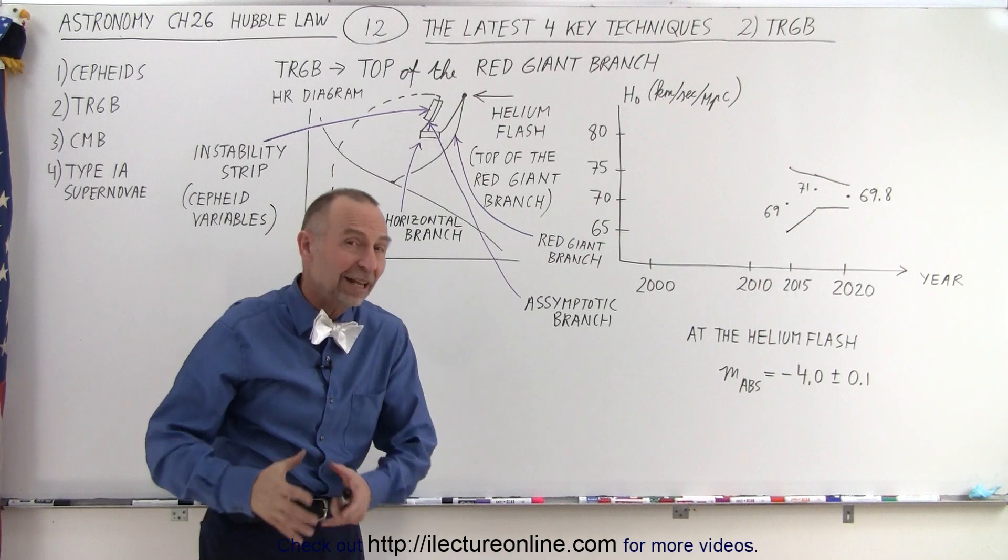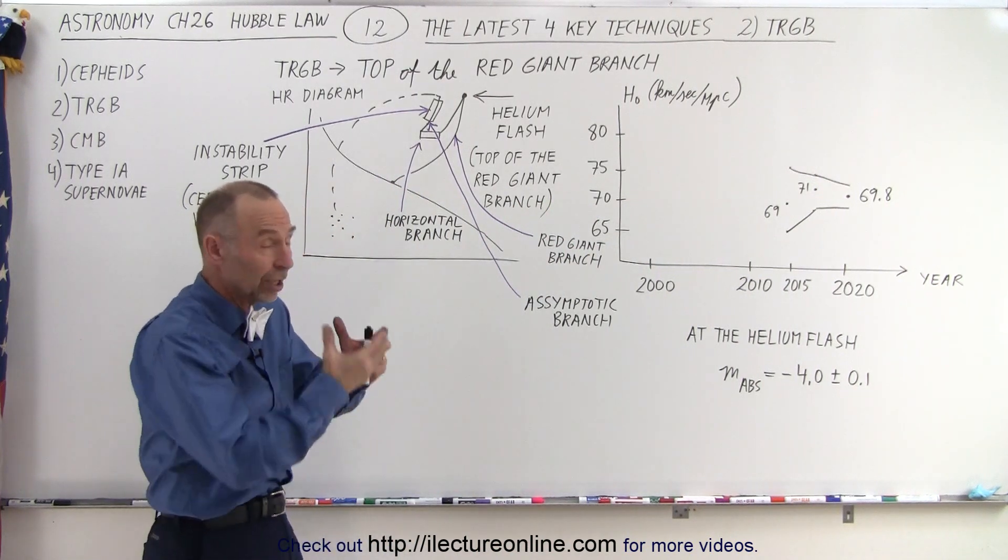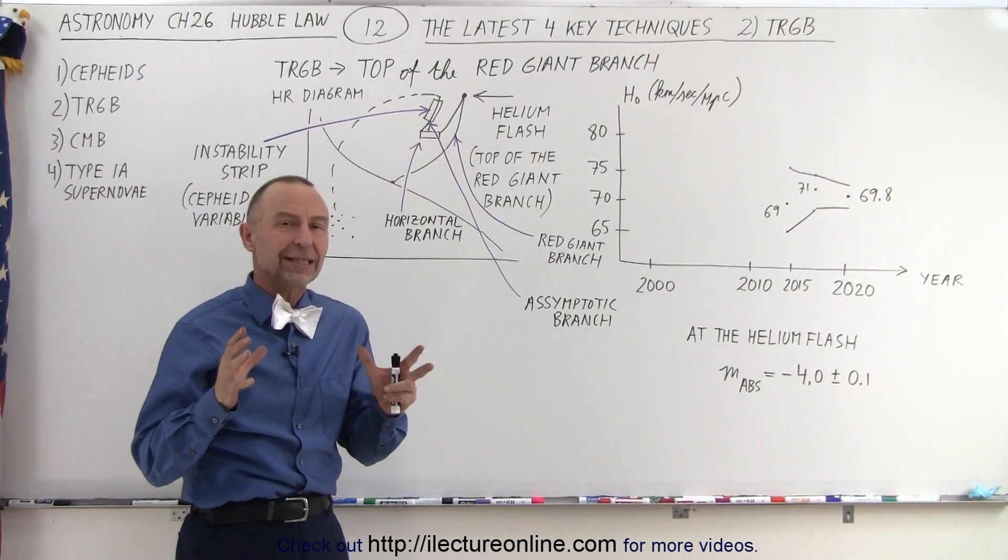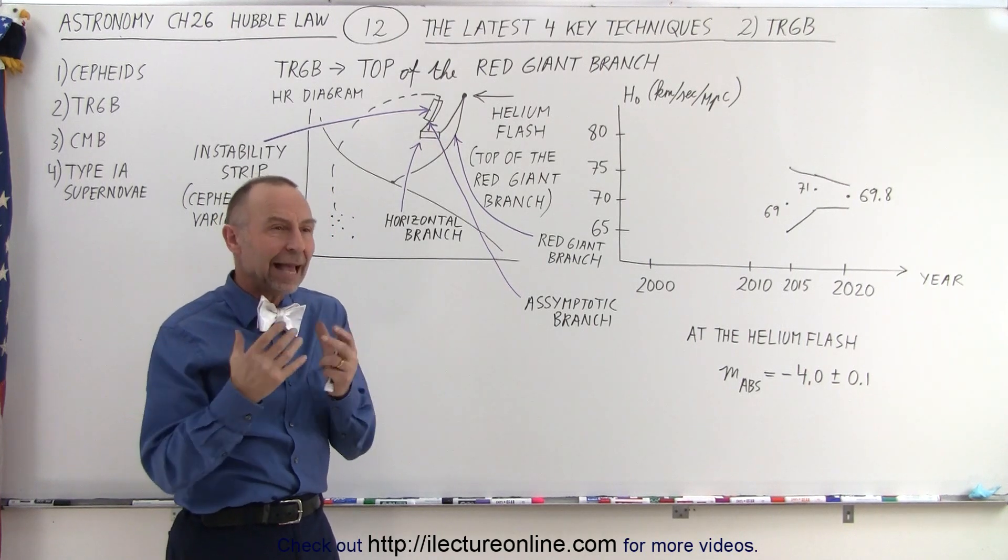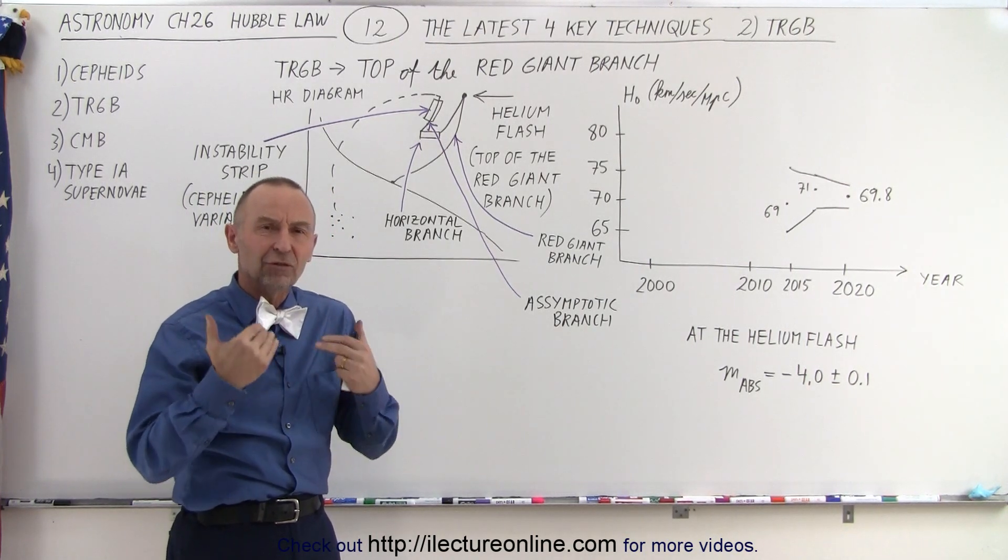What does that mean and what does that have to do with finding the Hubble constant? We need to look for something that is very bright and that has a luminosity that is very predictable.